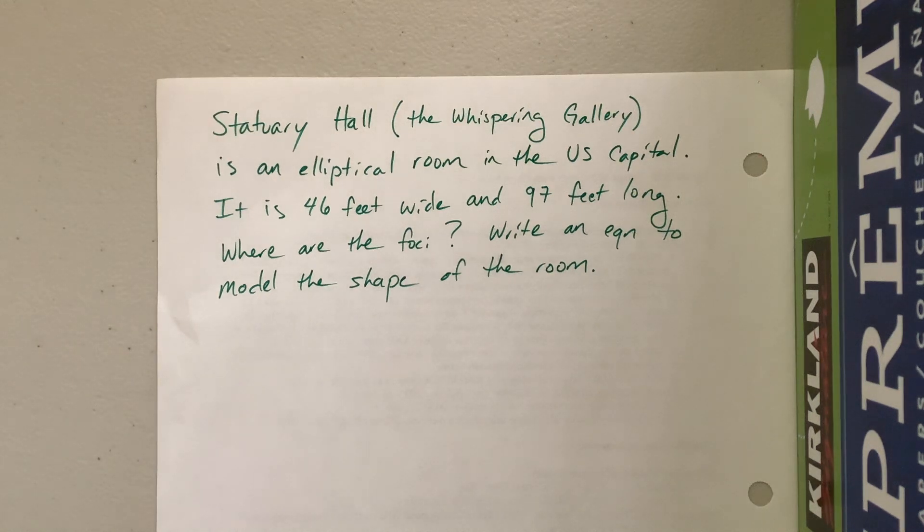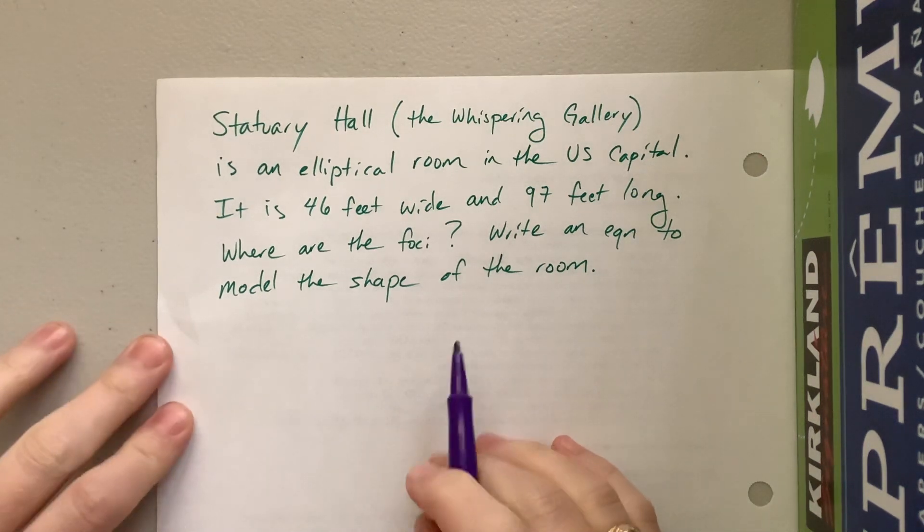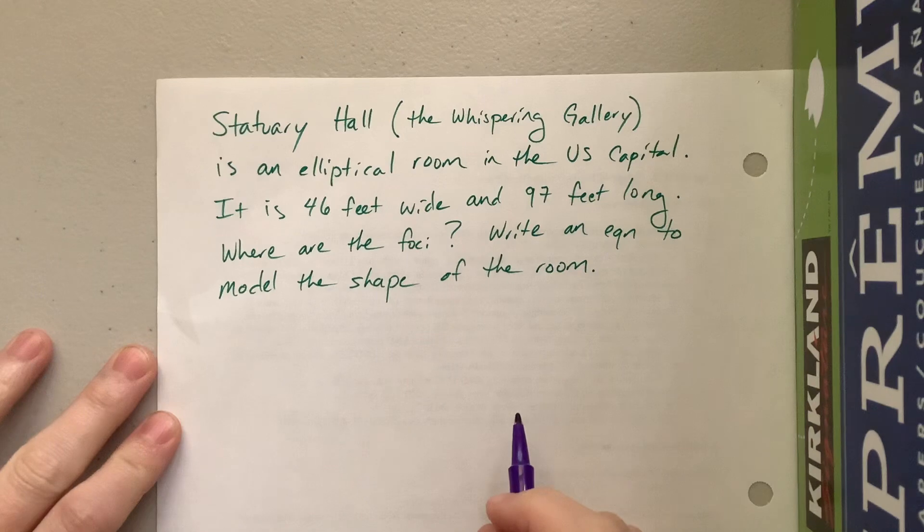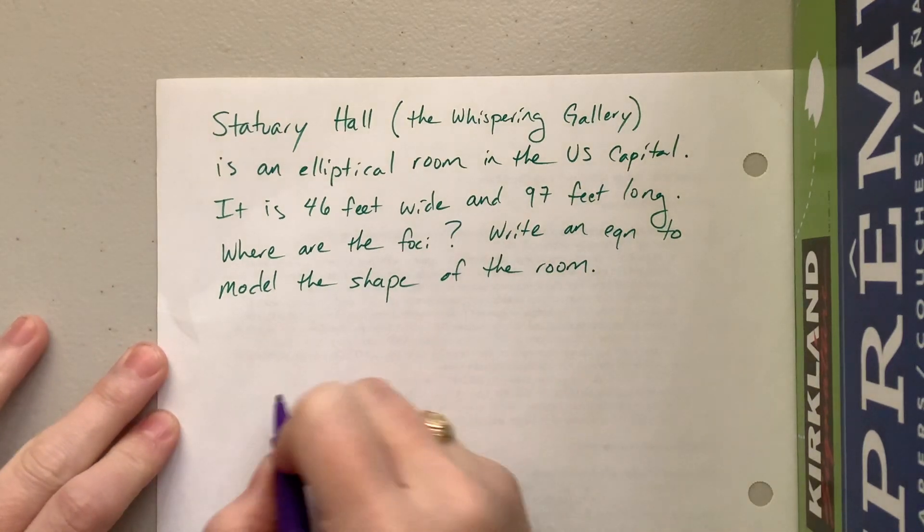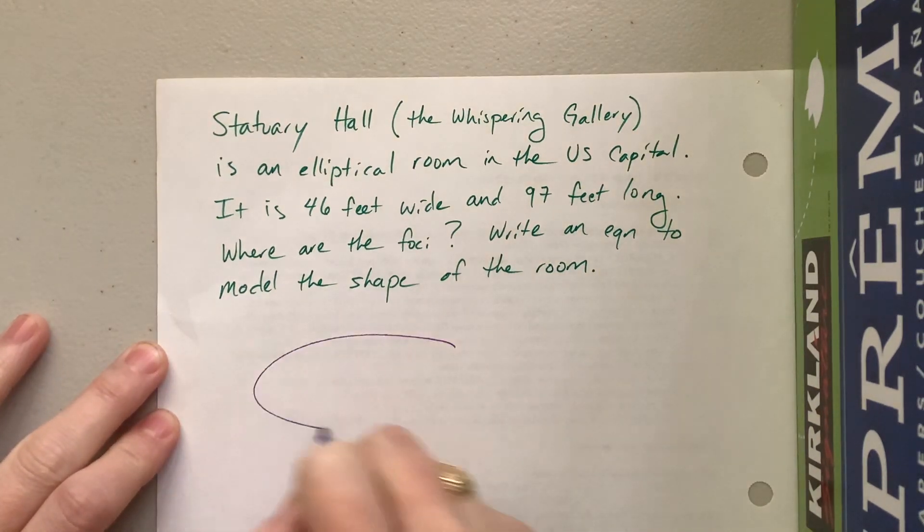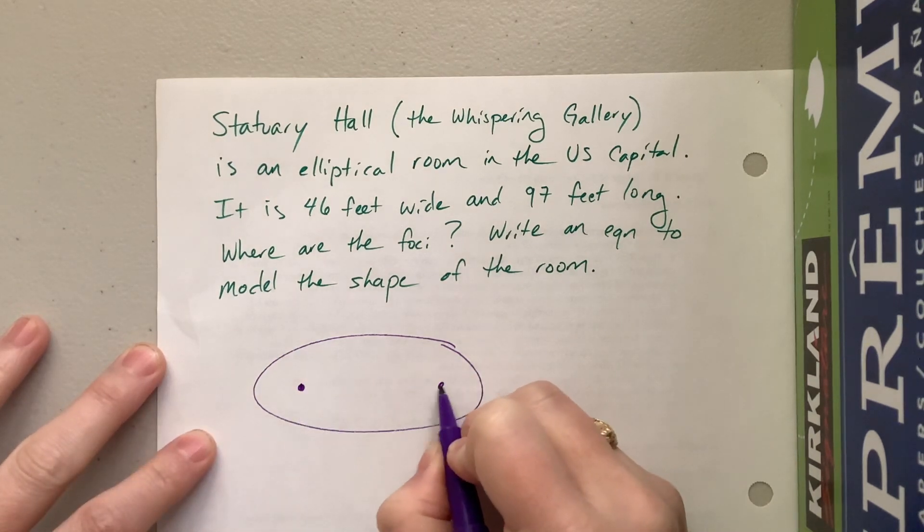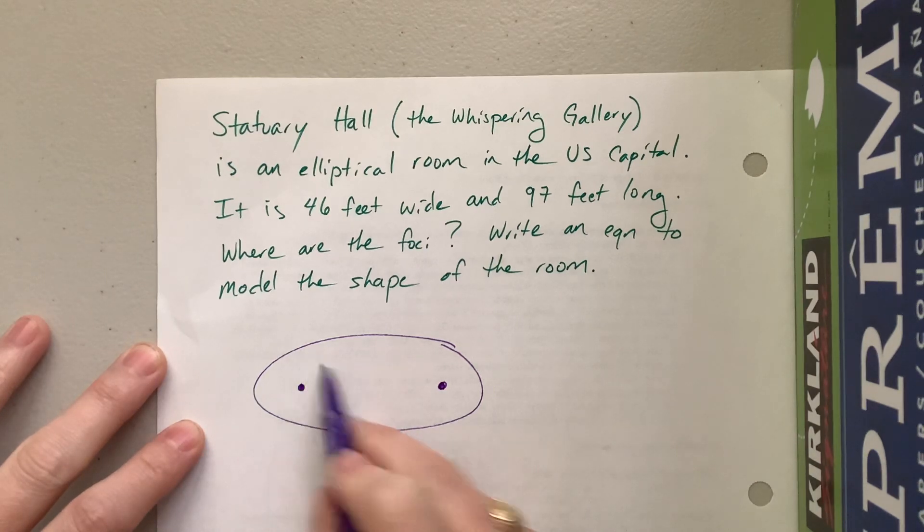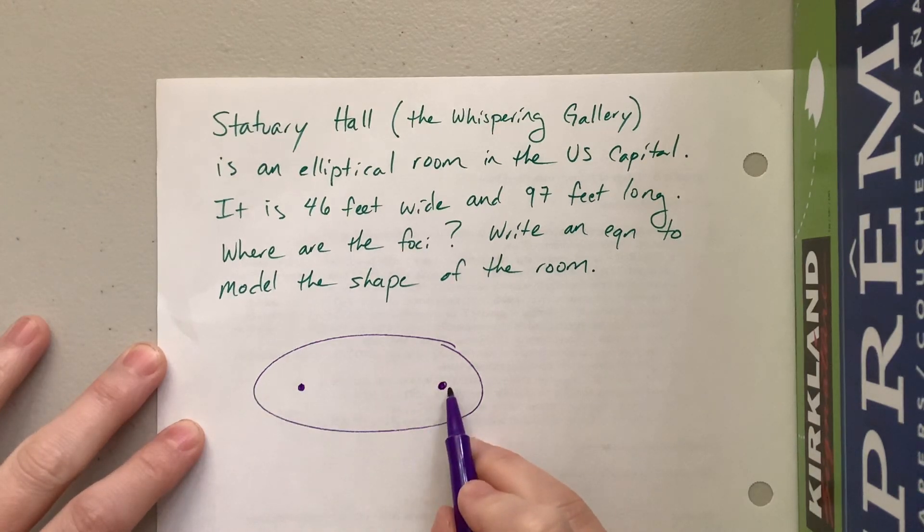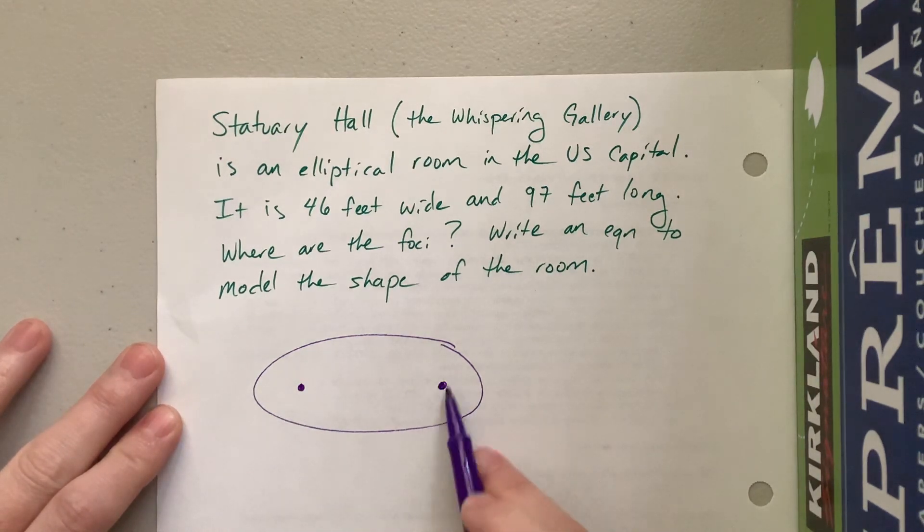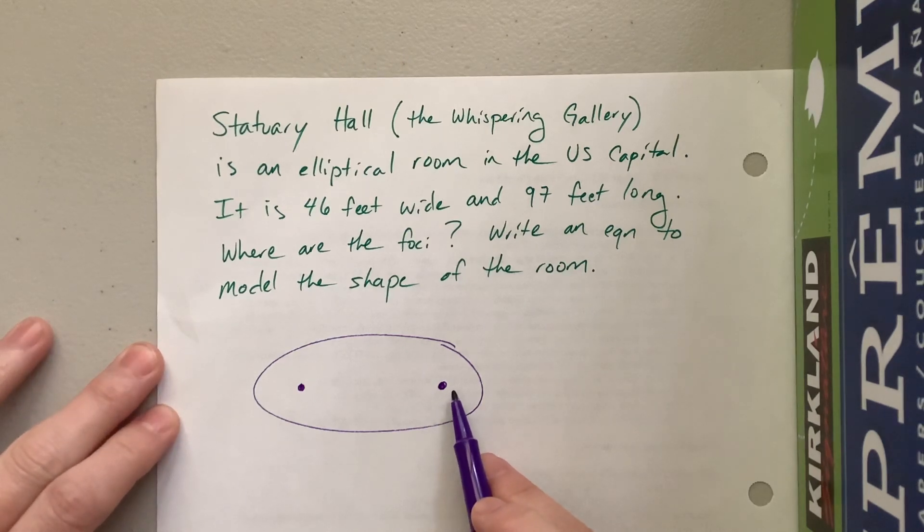All right, in this problem we're told that Statuary Hall, a whispering gallery in the United States Capitol, is an elliptical shaped room. Apparently, if you're at one of the foci and you whisper, the sound will bounce off the walls in such a way that it then goes and hits the other foci. So you can whisper at one spot and be rather far away from the other person, but somebody can stand at the other foci and hear you when you whisper.